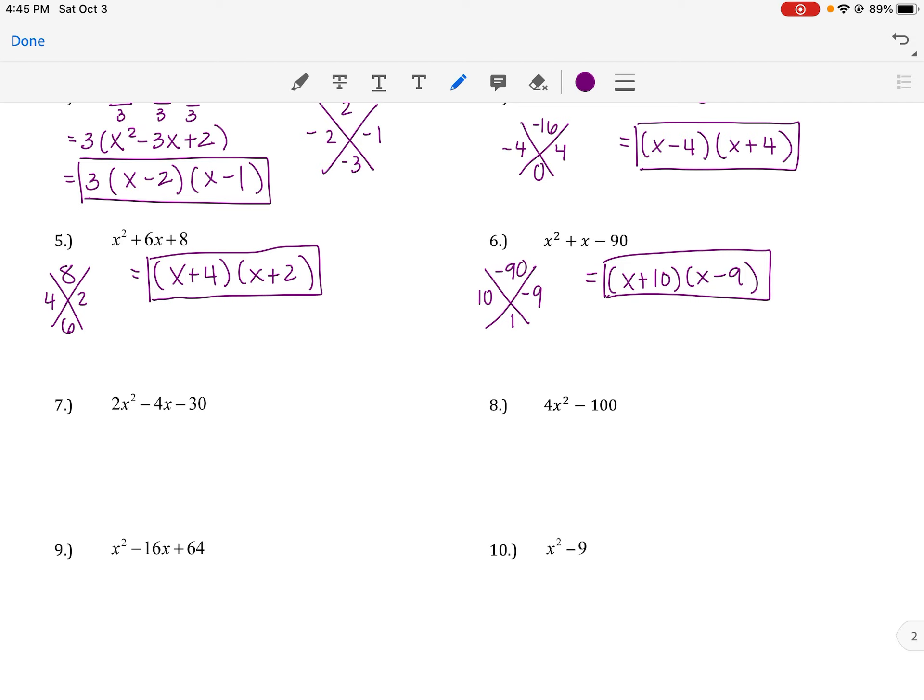This one you may notice, there's a 2 up front, and we've got a 4 and a 30. There's probably a GCF. They can each be divided by 2. So I take out a 2, I get x squared minus 2x minus 15. What multiplies to negative 15 and adds to negative 2? Negative 5 and 3. So we still need to write that 2 out front, but then our two sets of parentheses are x minus 5, x plus 3.